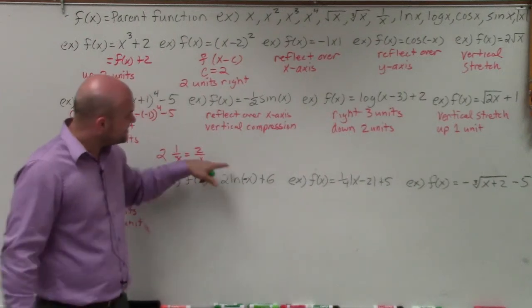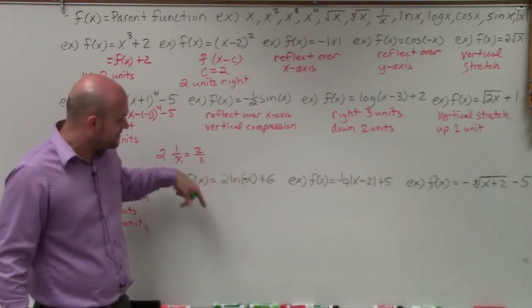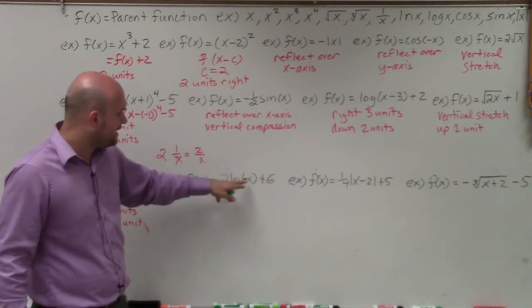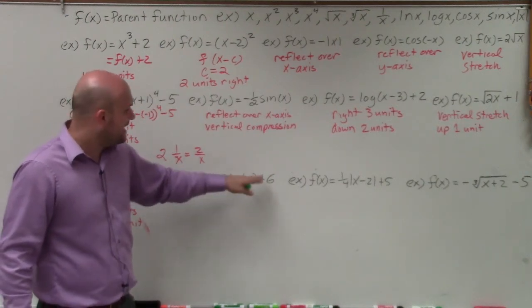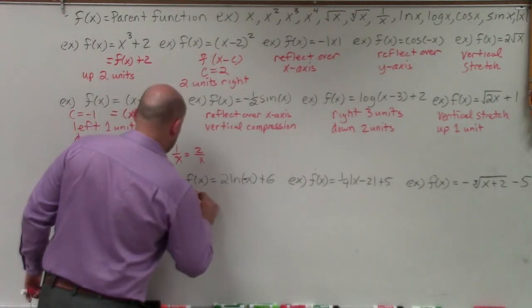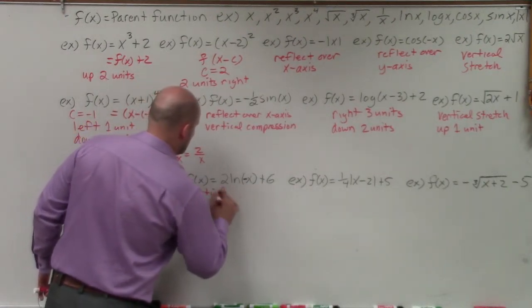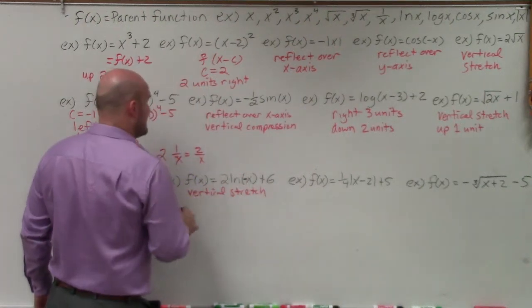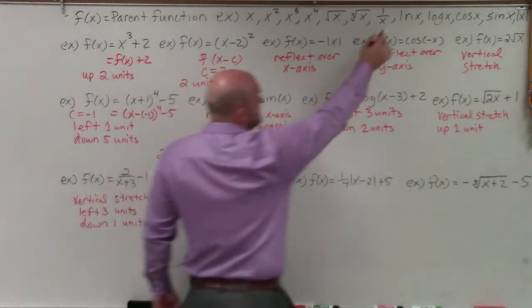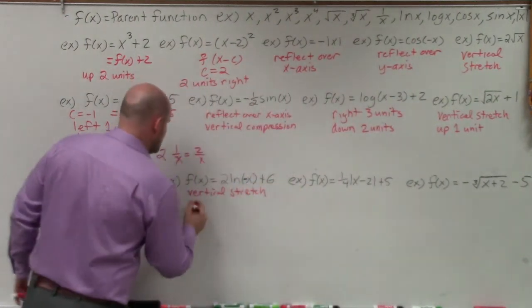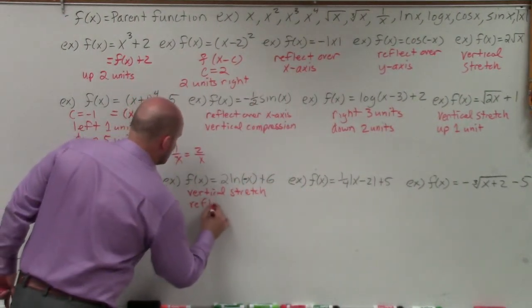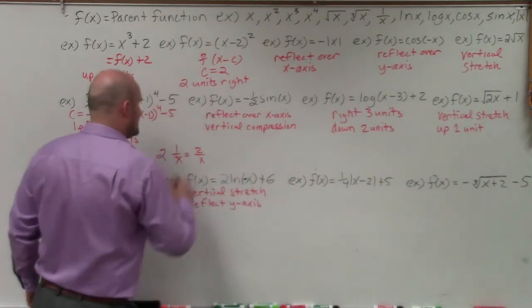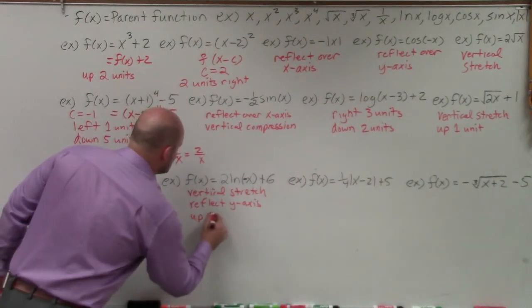In this next example, I have 2 times ln of negative x plus 6. I'm multiplying by 2 outside — that's a vertical stretch. I'm multiplying by negative on the inside of the function, so that's a reflection over the y-axis. And I'm adding 6 on the outside, so that's up 6 units.